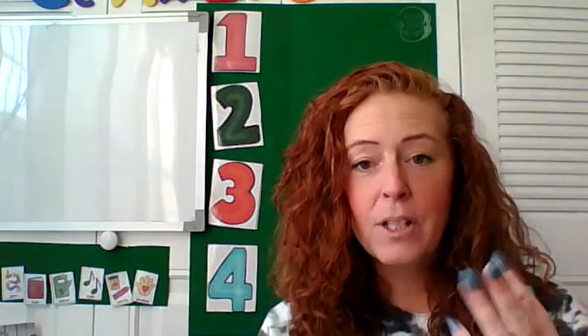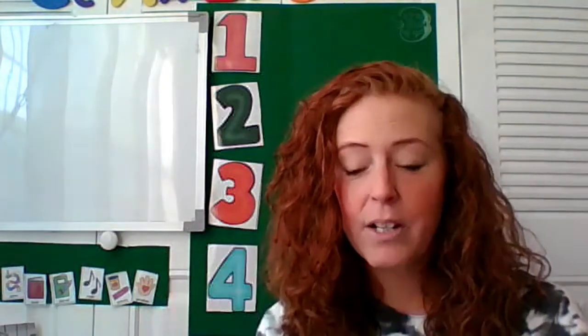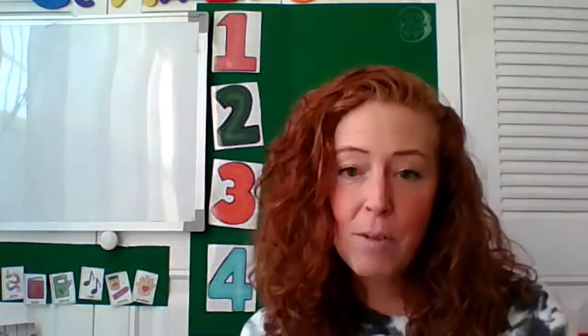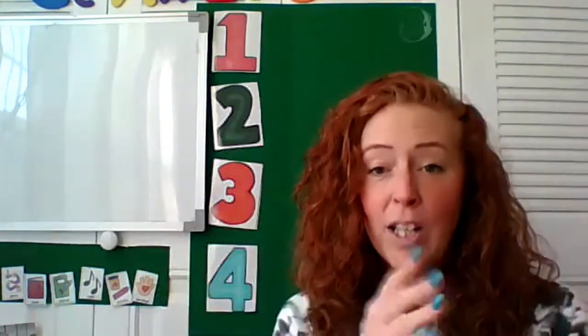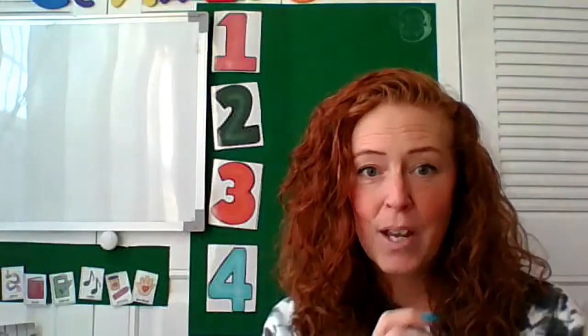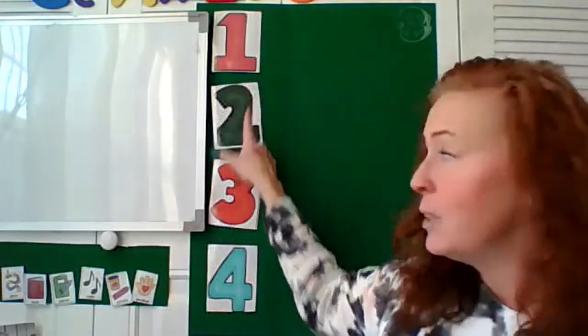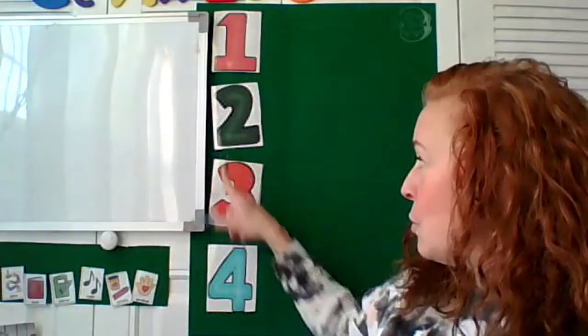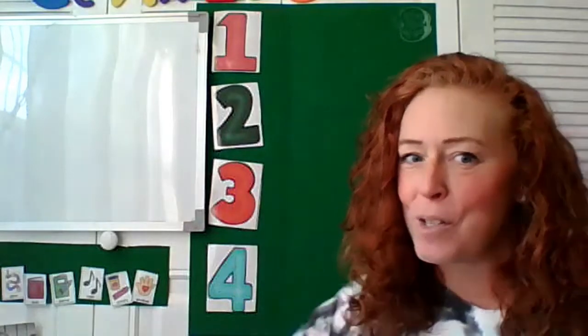Syllable has three sections to that word. So I have some pictures here. We're going to name the pictures. What we're going to do is we're going to clap out the syllables and we're going to put them where they belong — if they have one, two, three, or four syllables.